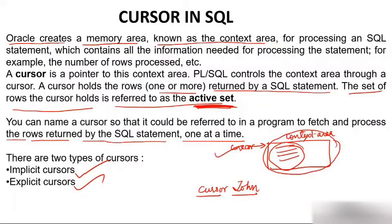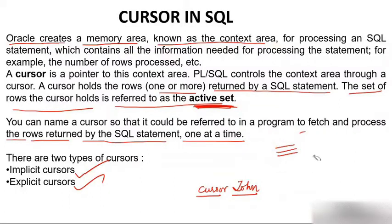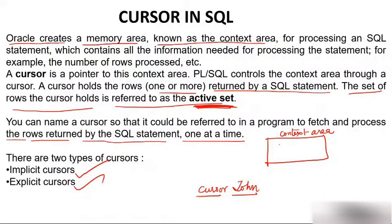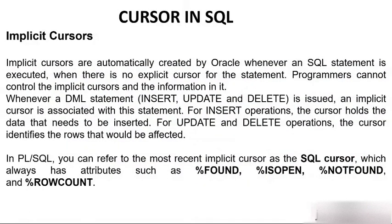What is a cursor? Prior to cursor execution, Oracle creates a memory area known as the context area, for processing the SQL statement. The pointer to this area is known as cursor. Implicit cursors are automatically created by Oracle whenever an SQL statement is executed.